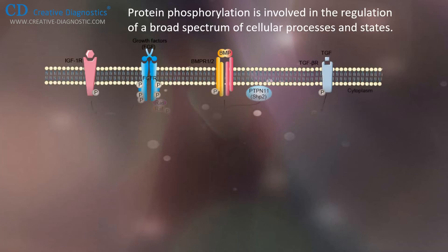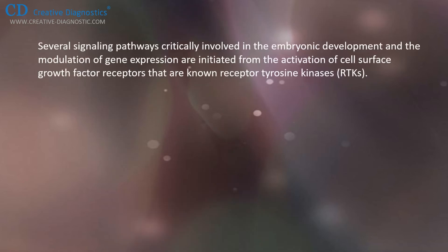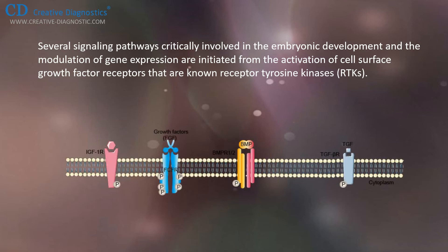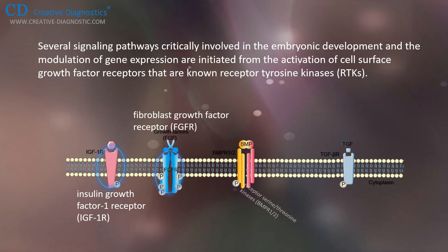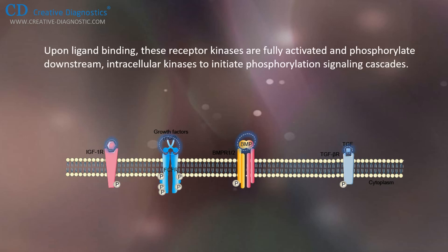Protein phosphorylation is involved in regulation of a broad spectrum of cellular processes and states. Several signaling pathways critically involved in embryonic development and the modulation of gene expression are initiated from the activation of cell surface growth factor receptors that are known receptor tyrosine kinases, such as insulin growth factor 1 receptor, fibroblast growth factor receptor, receptor serine/threonine kinases BMPR, and kinase TGF-BetaR. Upon ligand binding, these receptor kinases are fully activated and phosphorylate downstream intracellular kinases to initiate phosphorylation signaling cascades.